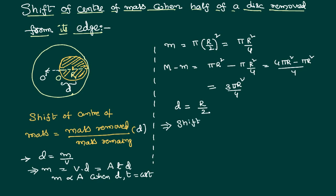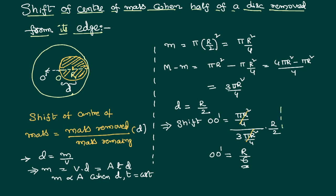Therefore, the shift OO' equals mass removed over mass remaining times the distance: (πR²/4) divided by (3πR²/4), multiplied by R/2. Cancelling πR²/4, the shift equals R/6 — that is 1/6th of the radius of the disc. Note that this result is valid when you remove mass from one corner or edge of the disc.